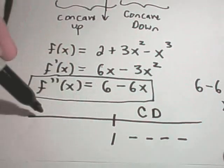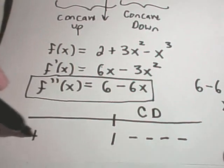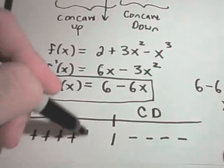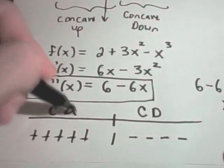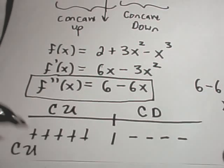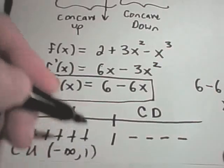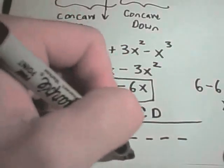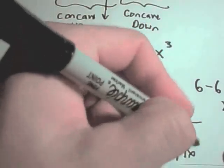If we take a number smaller than 1, say 0, we get a positive number, which means the graph is concave upward on that interval. So it's concave up on the interval (-∞, 1), and concave down on the interval (1, ∞).